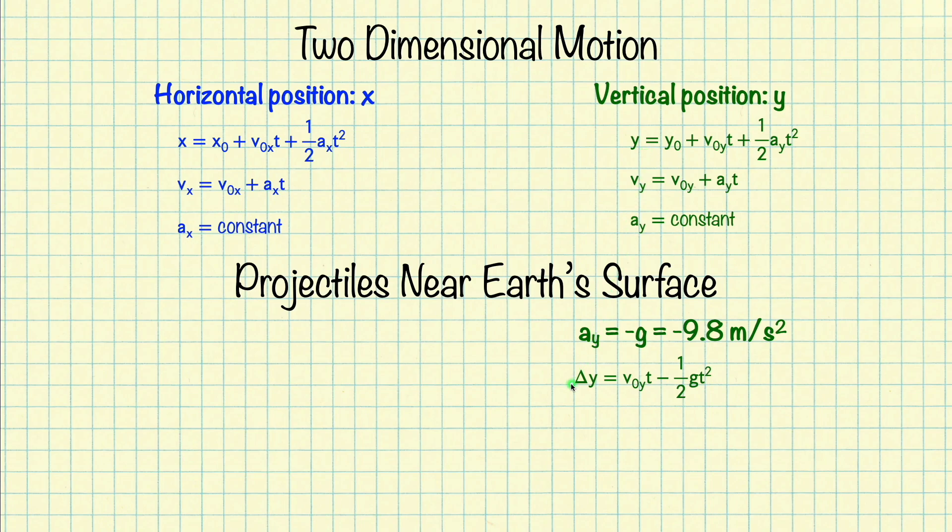So we have that the change in the y coordinate, or the vertical coordinate, is equal to the initial y velocity times time minus one half g t squared. We can then plug in a_y equals negative g to the y velocity equation, to get that the y velocity equals the initial y velocity minus g times time.